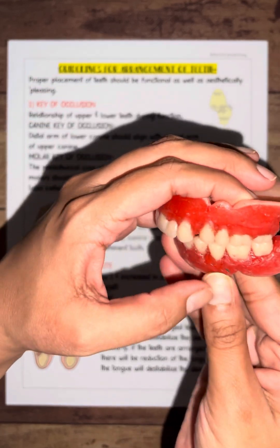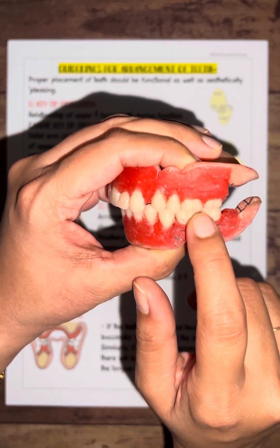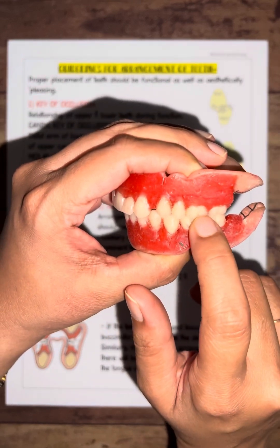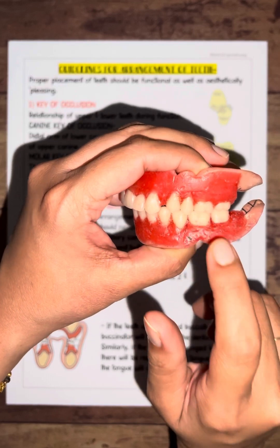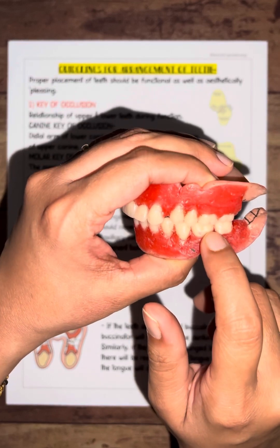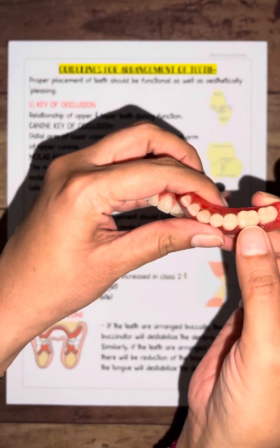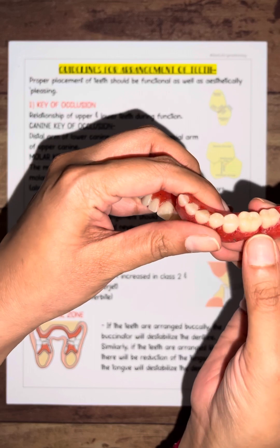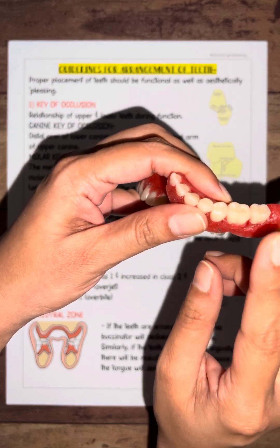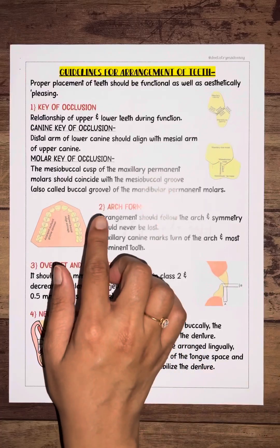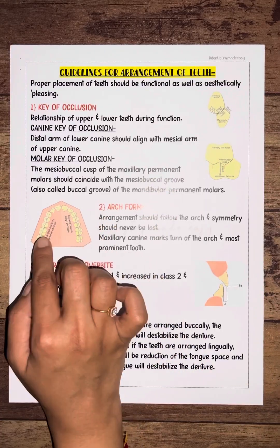For the molar key of occlusion, the mesiobuccal cusp of your upper molar should coincide with the buccal groove of the lower first permanent molar.